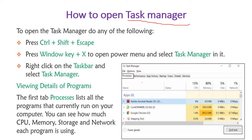We can open Task Manager in different ways. First option: press Ctrl+Shift+Escape together to open Task Manager. Second option: press Windows key and X together to open the power menu, then select Task Manager. Third option: right-click on the taskbar and select Task Manager. Using any of these three options, you can open Task Manager.